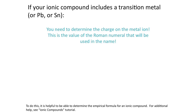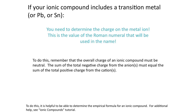Remember that the Roman numeral represents the charge of the metal ion, not the number of metal ions in the formula. A common mistake is thinking the Roman numeral is the count of metal ions, but that's not the case. In order to determine the charge, we need to use a little deductive reasoning. Remember, the overall charge of an ionic compound must be neutral, so the sum of the total negative charges from the anions must equal the sum of the total positive charge from the cations.